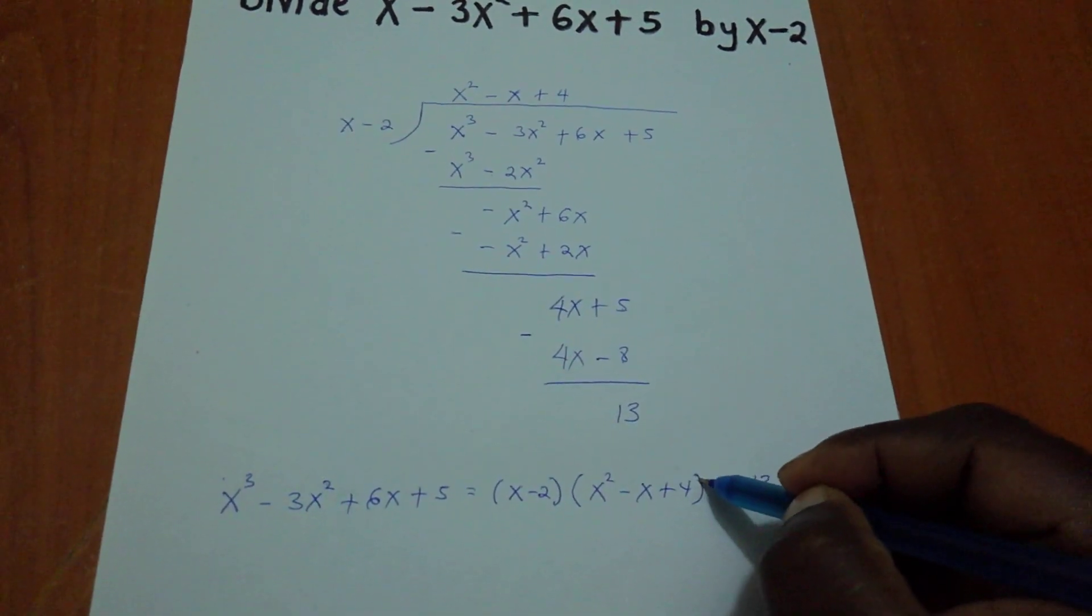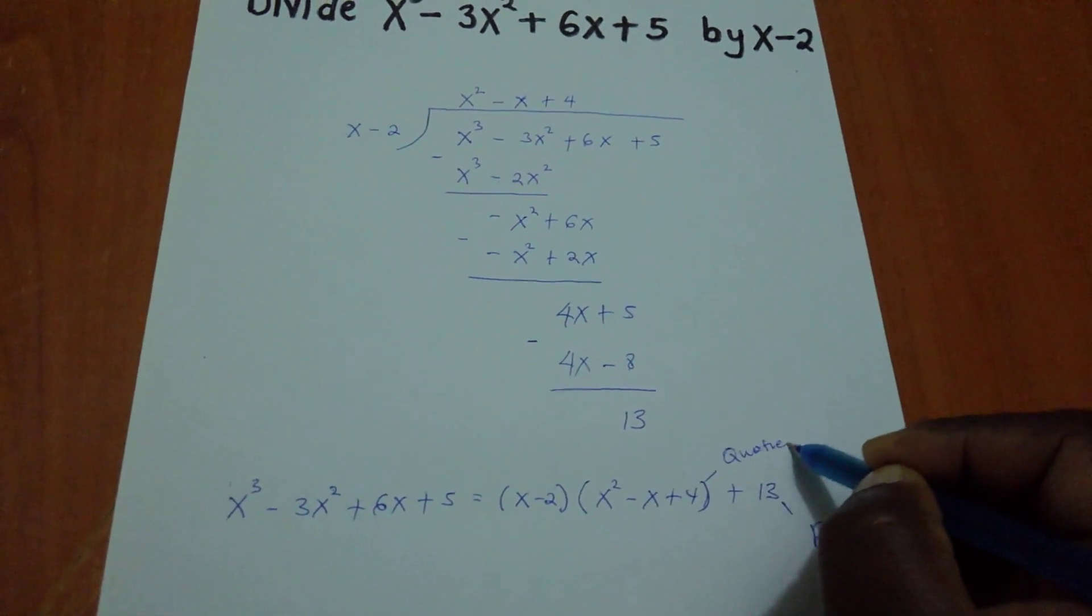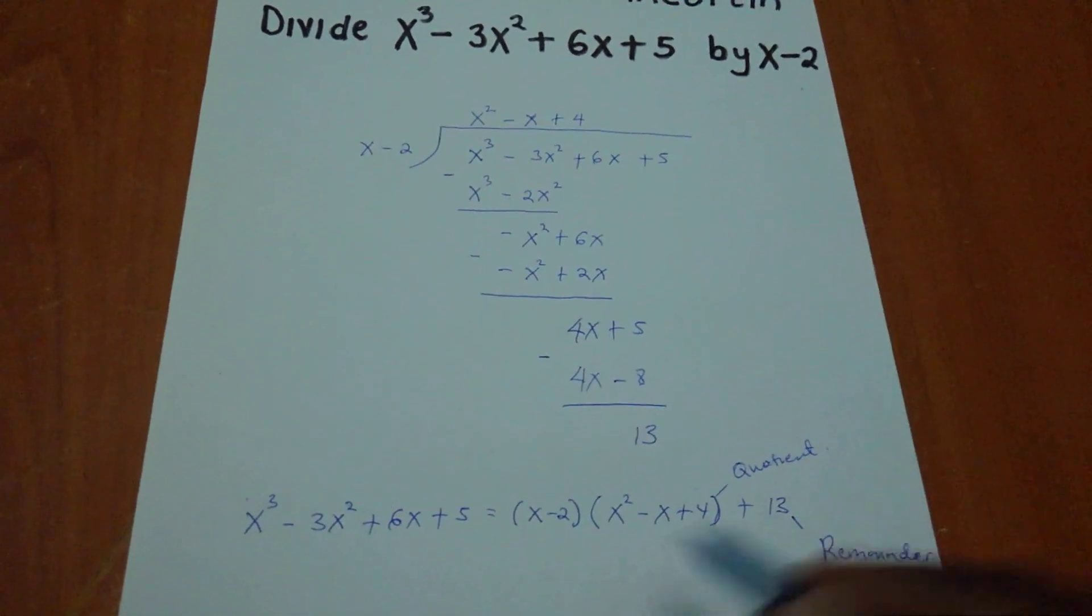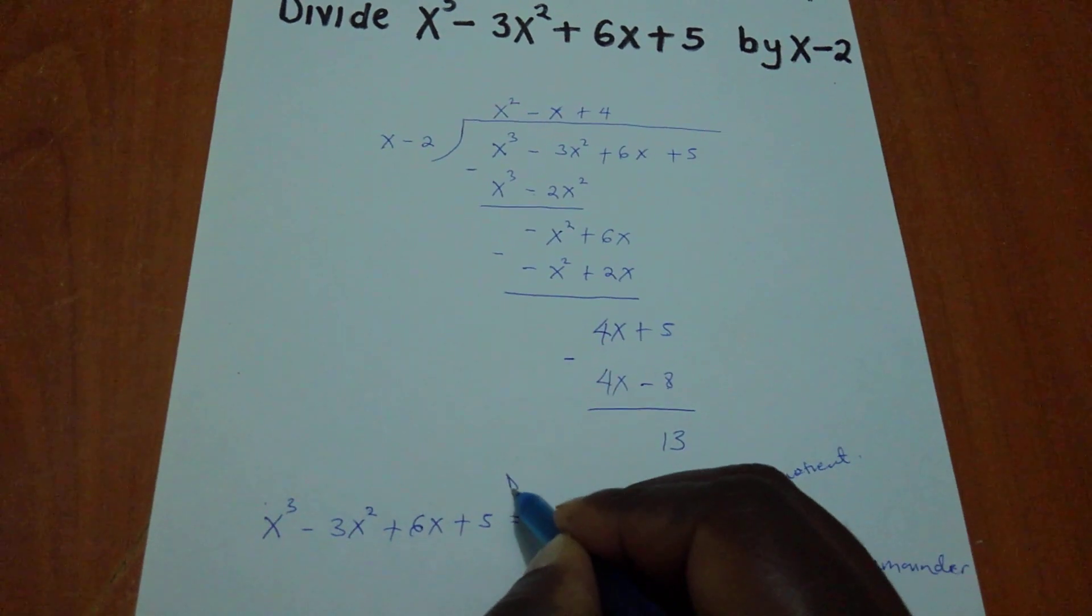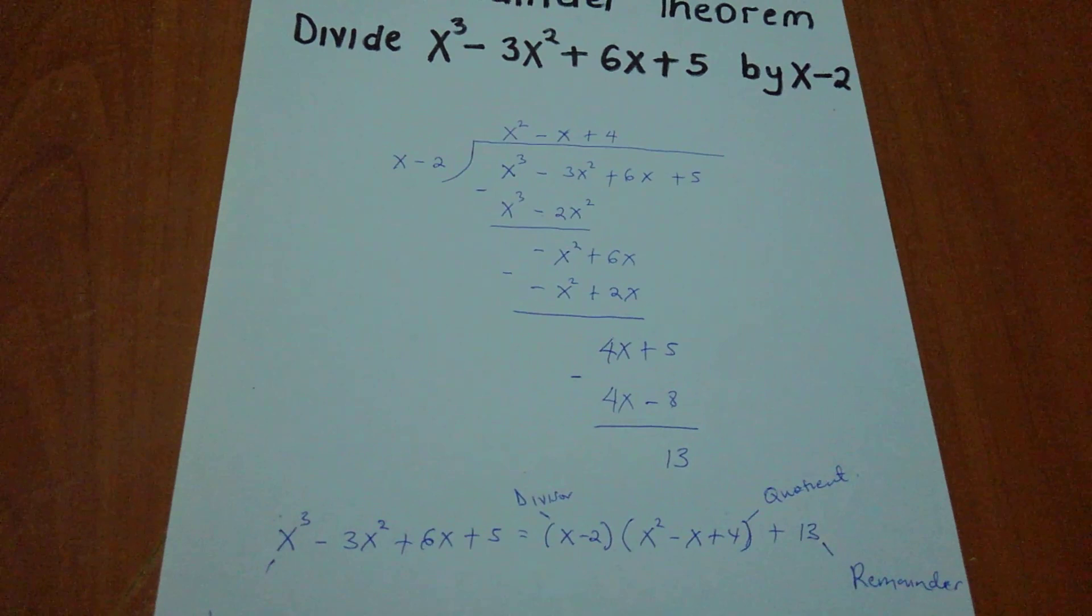So this 13 is the remainder, x² - x + 4 is the quotient, x - 2 is the divisor, and x³ - 3x² + 6x + 5 is the polynomial.